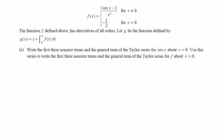In this problem we have a function f of x that is a piecewise defined function where the function behaves as cosine of x minus 1 over x squared for x not equal to 0 and negative 1 half when x is equal to 0.